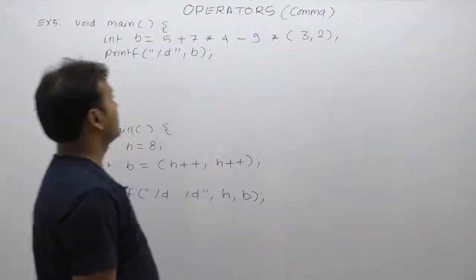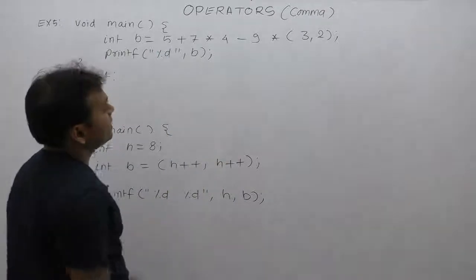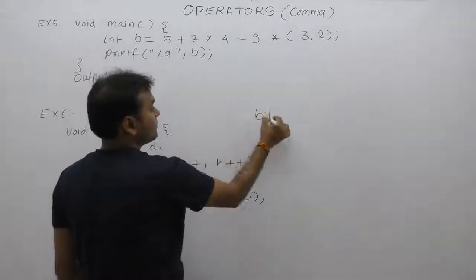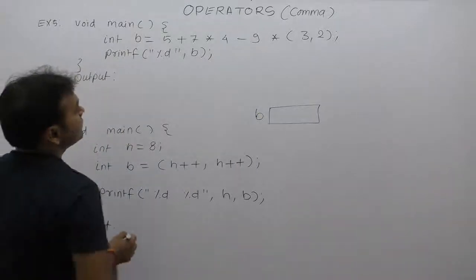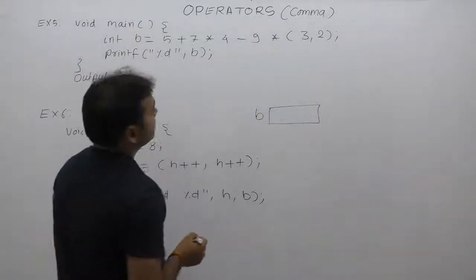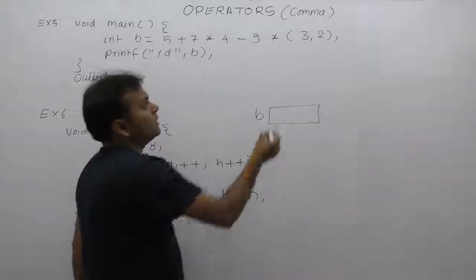Again, next example regarding comma operators. Here we are declaring some variables. Next, we are solving these expressions. First of all, this is the lower one expression. In this case, the important or new thing is this one.